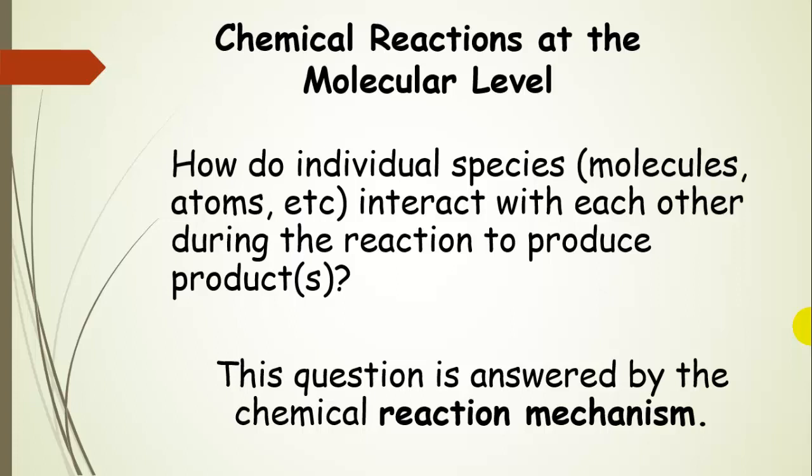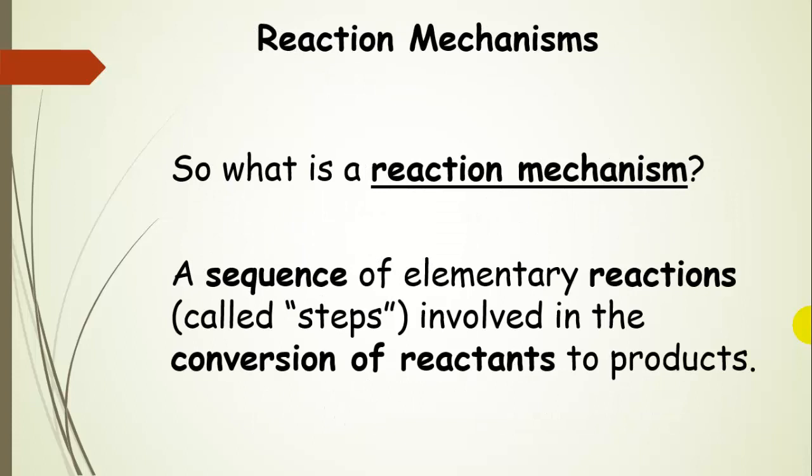What is a chemical reaction mechanism? A chemical reaction mechanism is basically just a sequence of elementary reactions, and we call these elementary steps, that are involved in the conversion of reactants to products. They're very simple steps on the pathway from reactants to products.